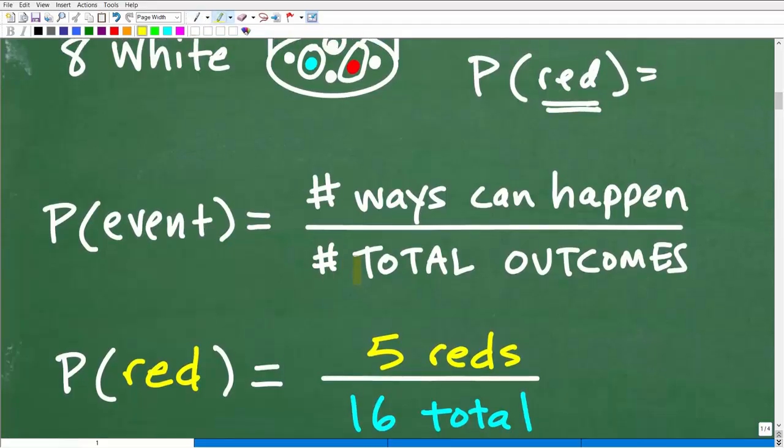So this is a nice, easy to understand, hopefully, way of defining probability. Now, there's more formal ways to define it, but effectively they say the same thing. So the probability of an event occurring is the number of ways that event could happen over, or divided by, the total number of outcomes.